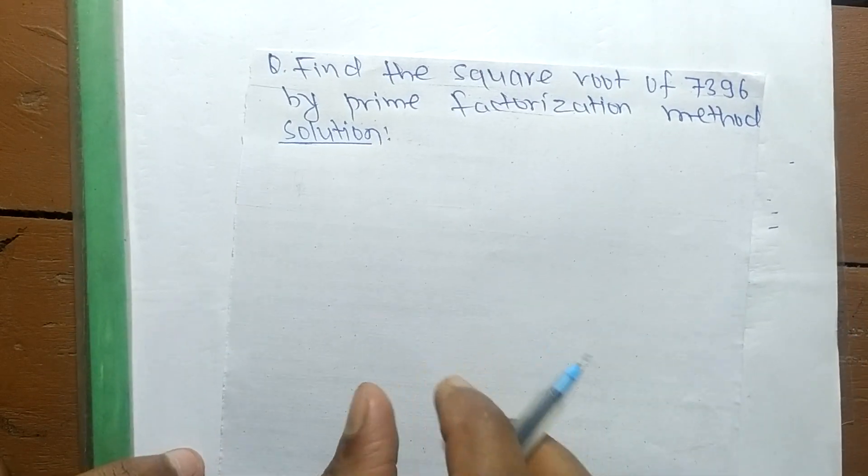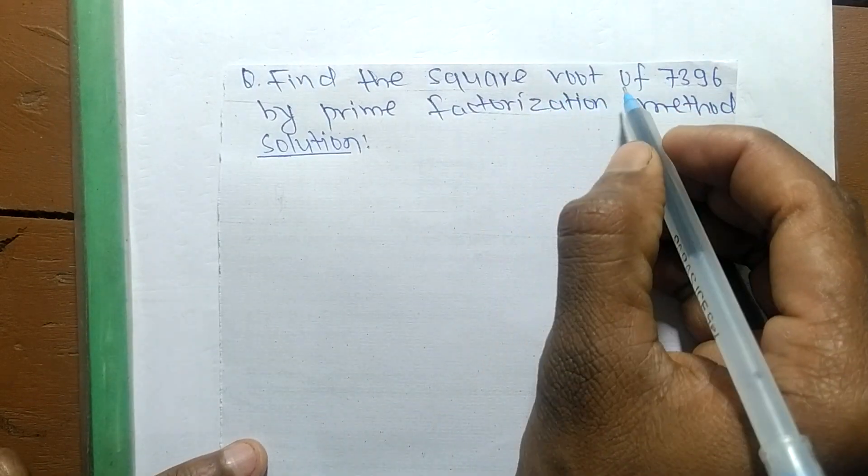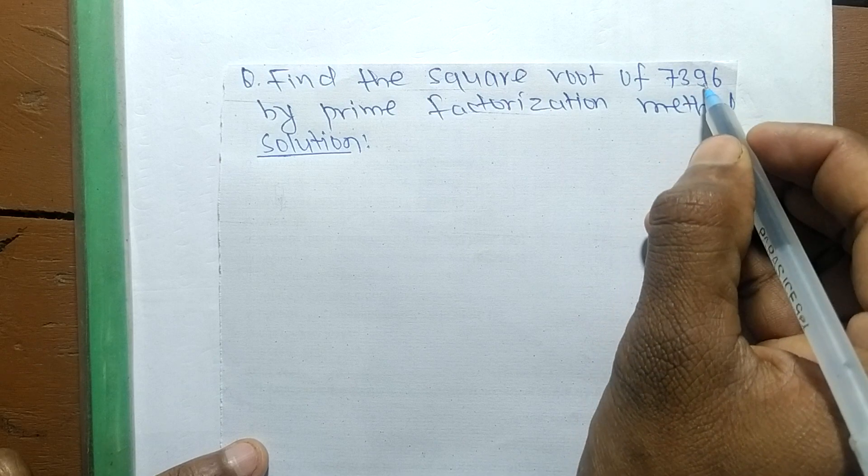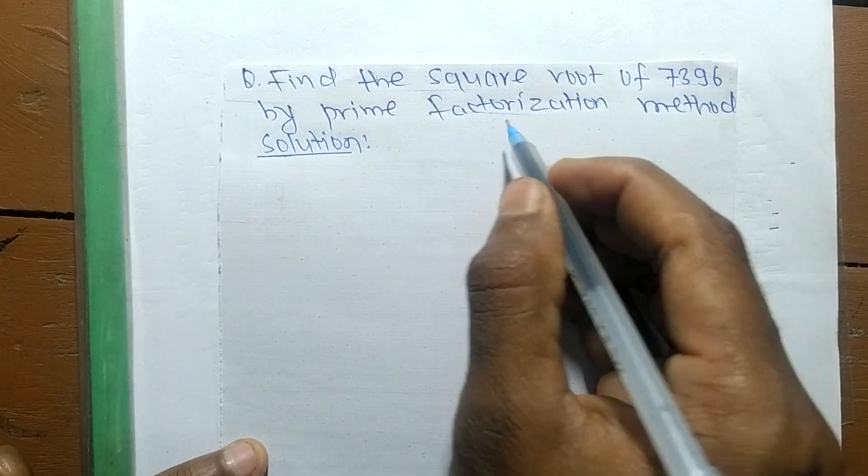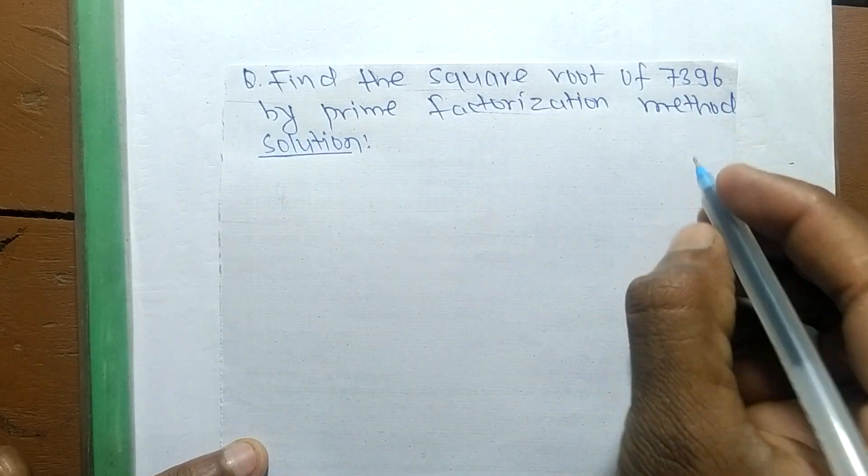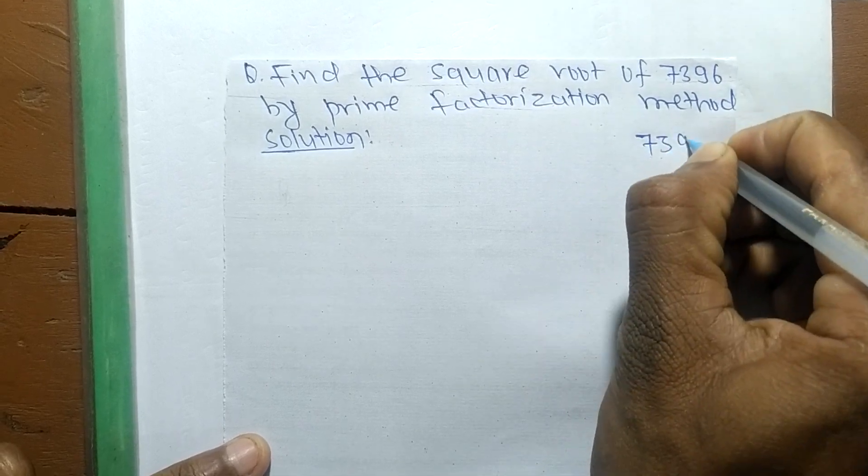Today in this video we shall learn to find the square root of 7396 by prime factorization method. First of all, we find out the prime factors of 7396.